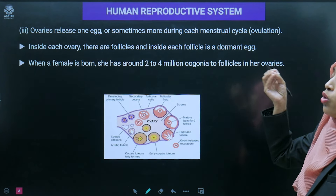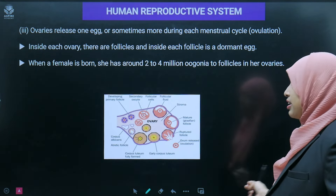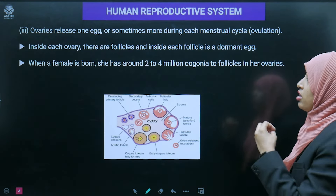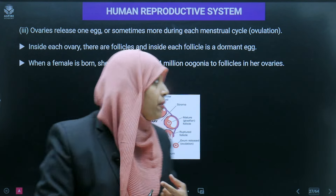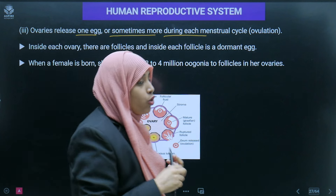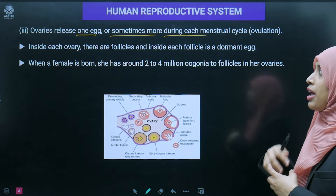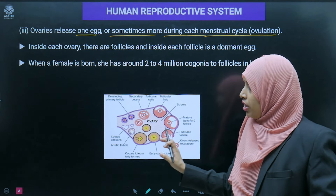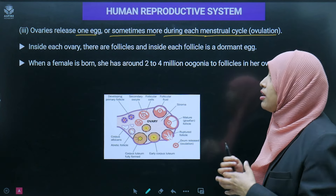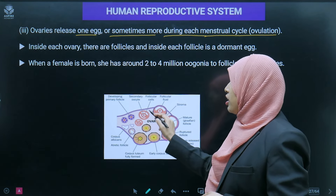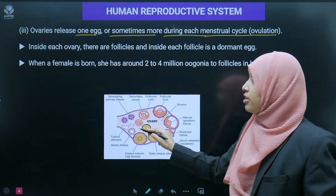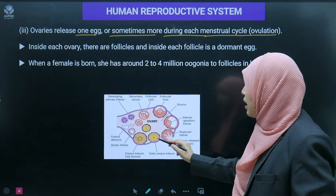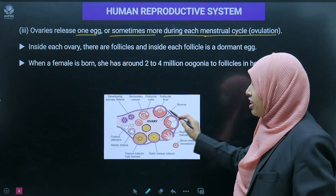Inside each ovary there are developing primary follicles, secondary oocytes, and follicle cells that surround the egg cells. The follicular fluid is also present. The entire stroma part contains the developing eggs. At birth, a female has 2 to 4 million oogonia (egg mother cells) already present in the ovaries — produced during fetal/embryonic development, though they are not yet mature.